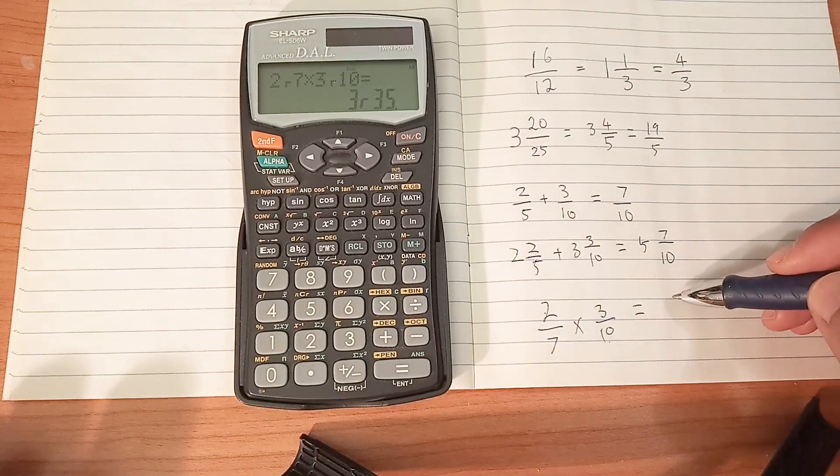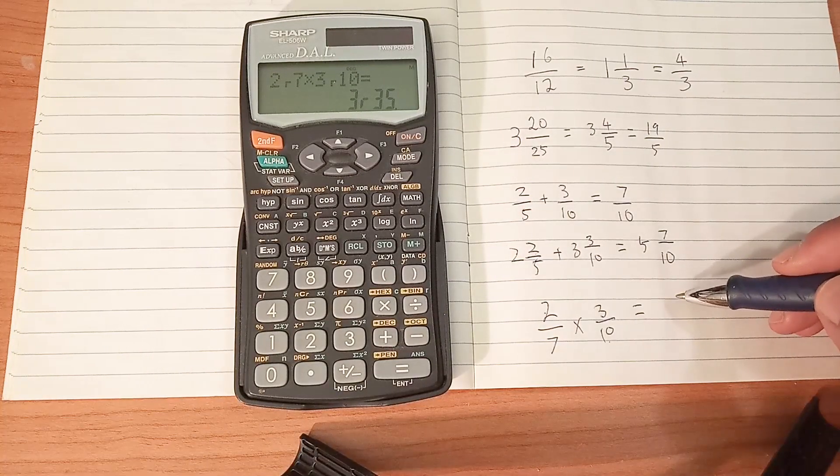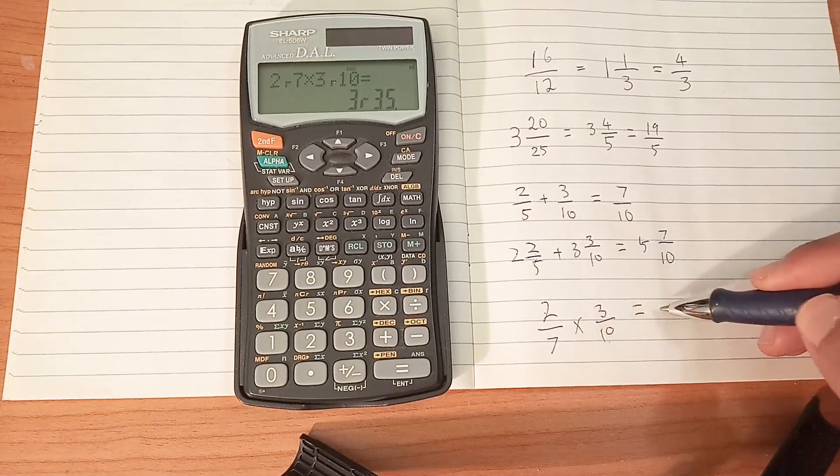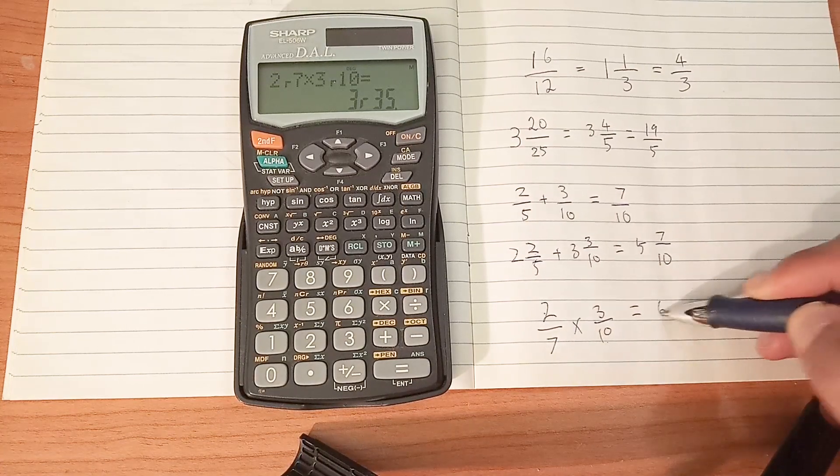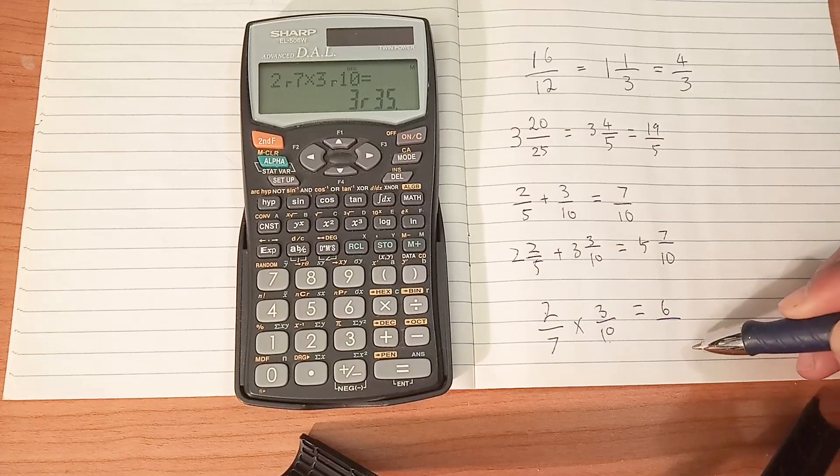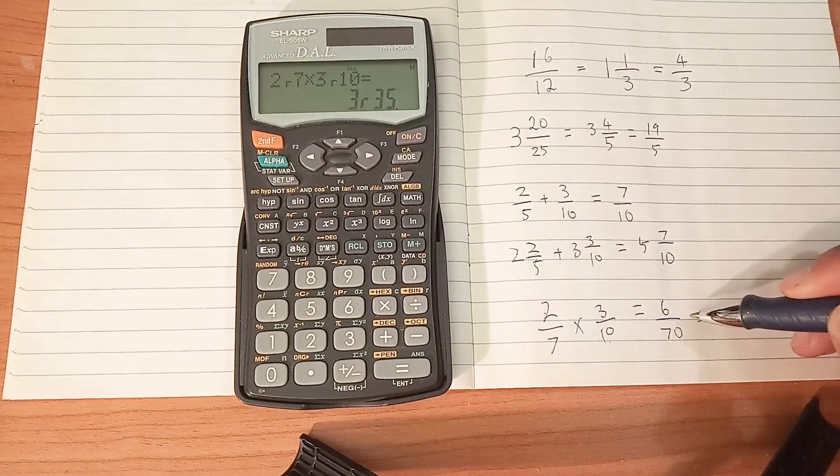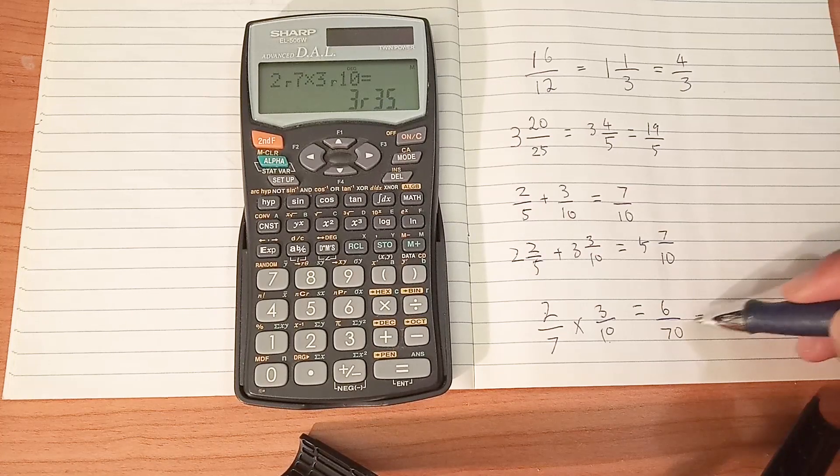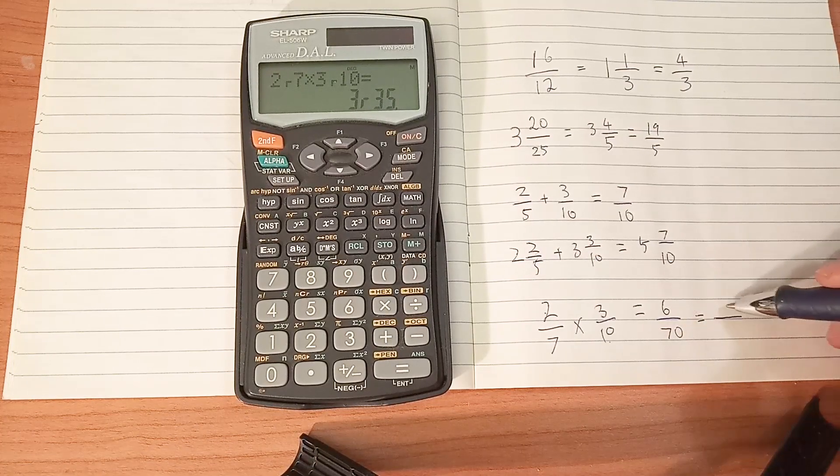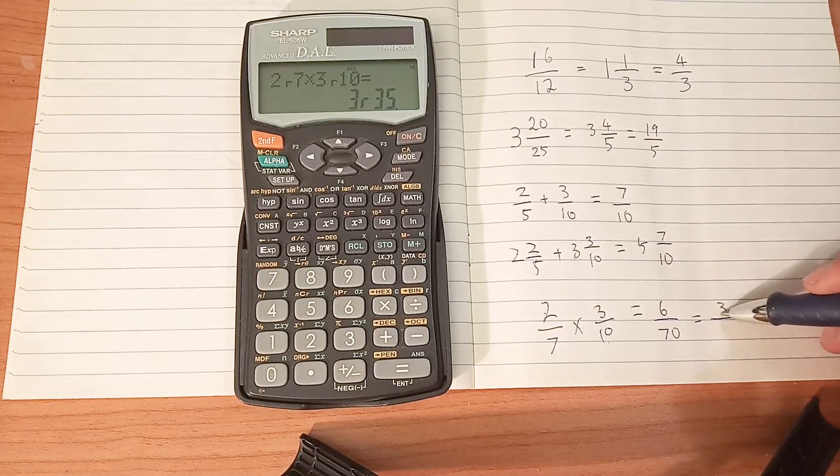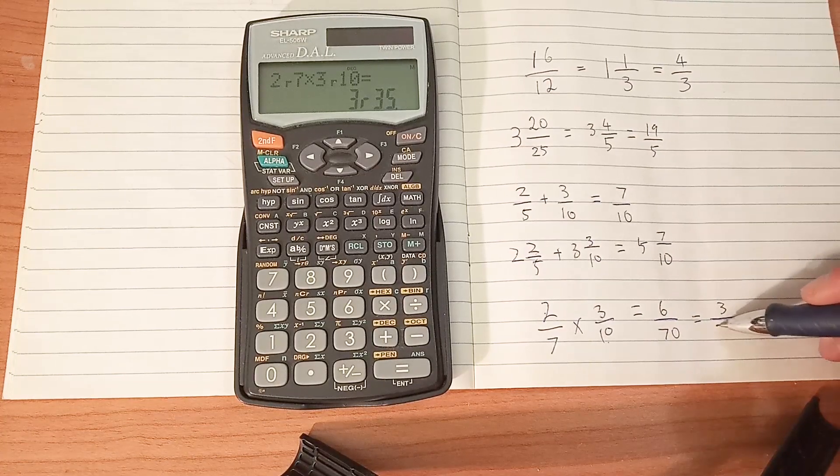And it says 3 over 35, but let's just check that it's right. So it's 2 times 3 on the top, which is 6. 7 times 10 on the bottom, which is 70. Both can be divided by 2. So 6 divided by 2 is 3, and 70 divided by 2 is 35.